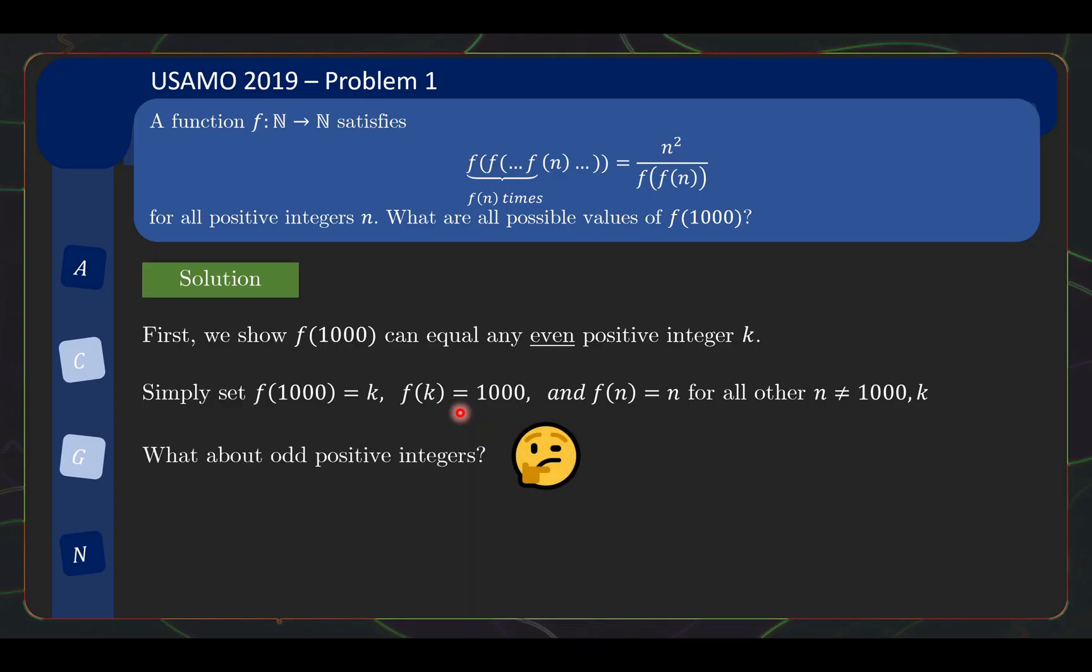Can f(1000) be a positive odd integer? Well, this is the second part of the problem that is a bit tricky. First, let's establish some basic observations. So, f(1) equals 1, we saw that already. This is something natural that you will want to check for any function equation, what is the value of f(1). Now, the other thing that we will typically check is whether f is injective.